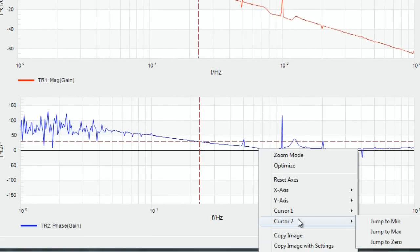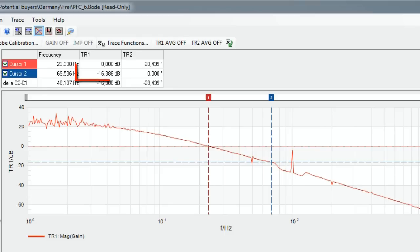We set cursor 2 to the 0 degree line and get a gain margin of minus 16 dB.